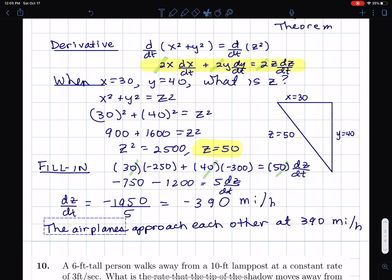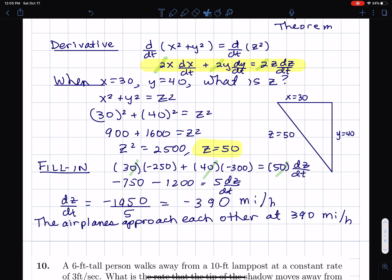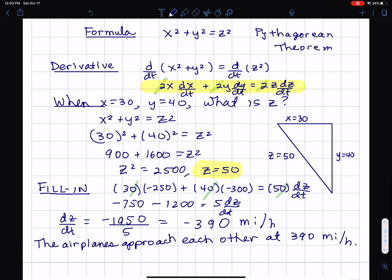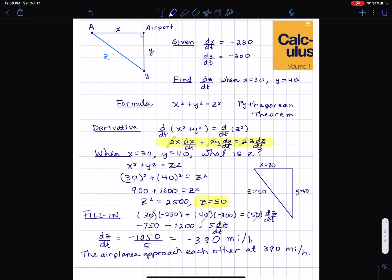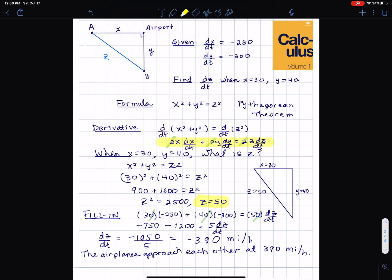Let's write this as a sentence. The airplanes approach each other at 390 miles per hour. What it means is when x is 30 and y is 40. I'll just leave that as the answer and assume that someone read the question so they understand what I mean by that.